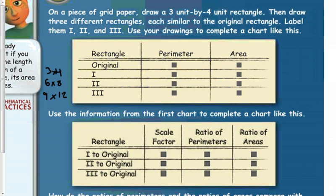For figure 1, the perimeter would be 3 plus 3 plus 4 plus 4, which equals 14. The area would be 3 times 4, which is 12. We're just looking at the numbers to see if we can find some patterns. For the second one, the 6 by 8, it would be 6 plus 6 plus 8 plus 8, which equals 28. The perimeter doubled.